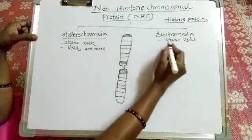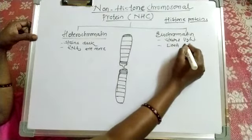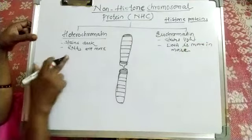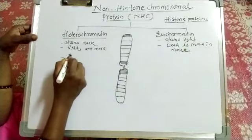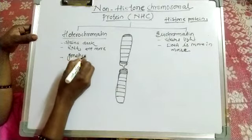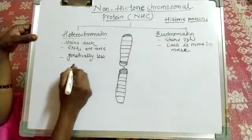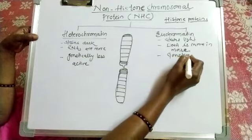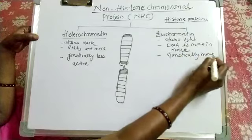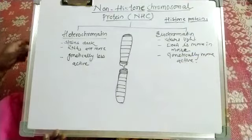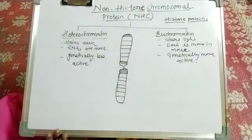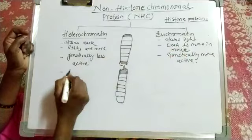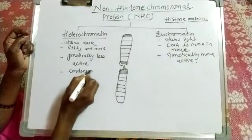This DNA is more in amount, and it is genetically less active. This heterochromatic one is genetically less active, and the euchromatic one is genetically more active. So the euchromatic region is a non-condensed one, while the heterochromatic region is a condensed region.